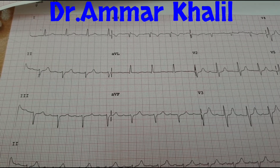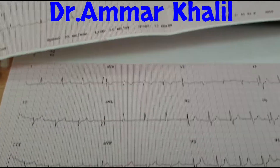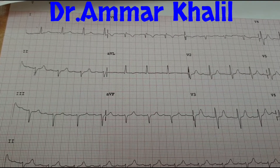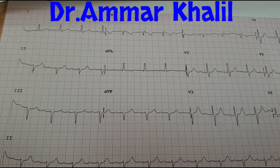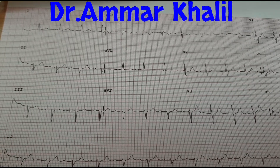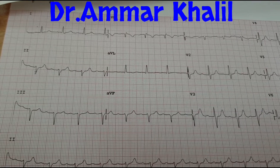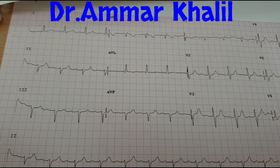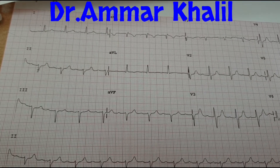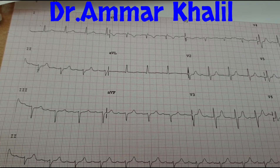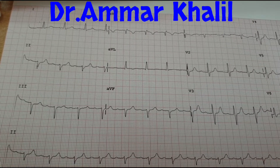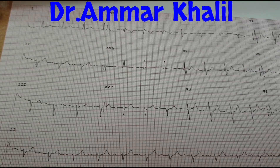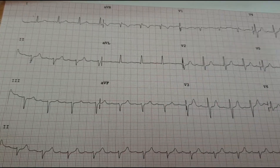Right axis deviation comes with lateral myocardial infarction, right ventricular hypertrophy, right bundle branch block, and pre-excitation syndromes like Wolff-Parkinson-White syndrome. This was a short review about how to determine the axis in ECG and the causes of each deviation. Follow me on my YouTube channel to learn more. Thank you for watching.